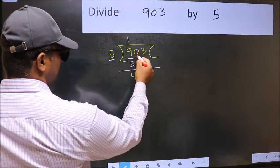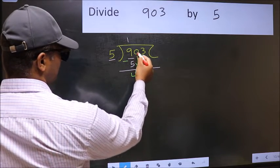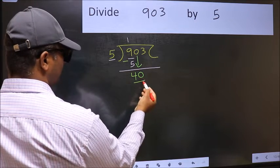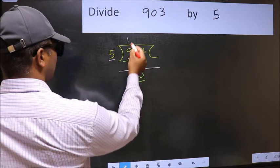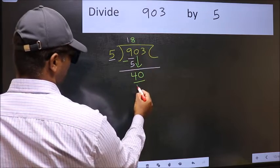After this, bring down the beside number. So 0 down. Now 40. When do we get 40 in 5 table? 5 times 8, 40.